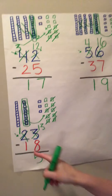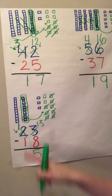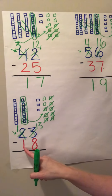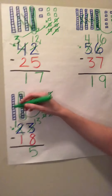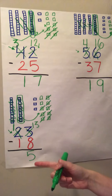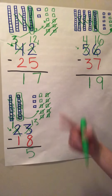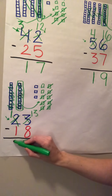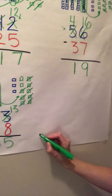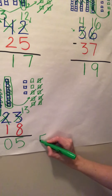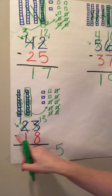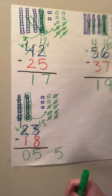Now we're ready to move on to our tens. We have one. We need to take how many away? One. So if we take that away, we're left with zero. So you can either put the zero here, or if you want, you can just keep it — your answer is five. So twenty-three minus eighteen equals five.